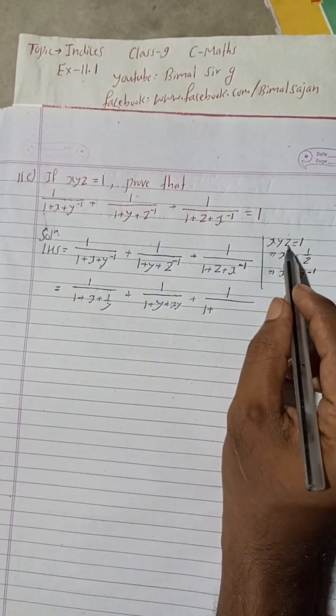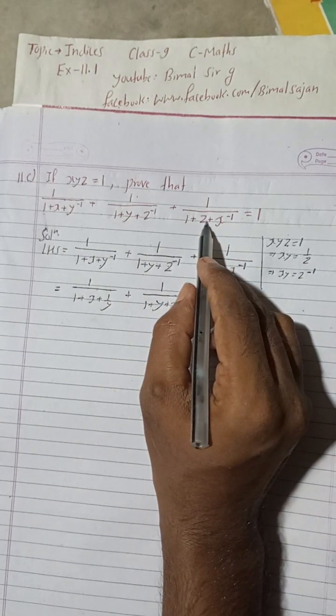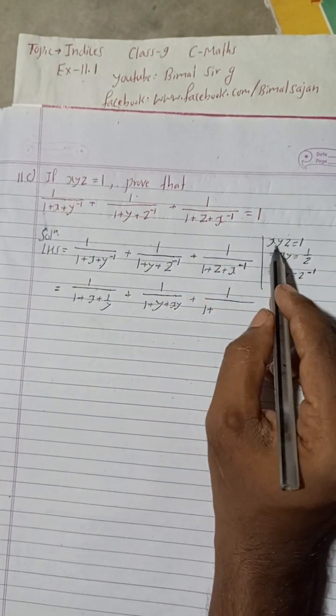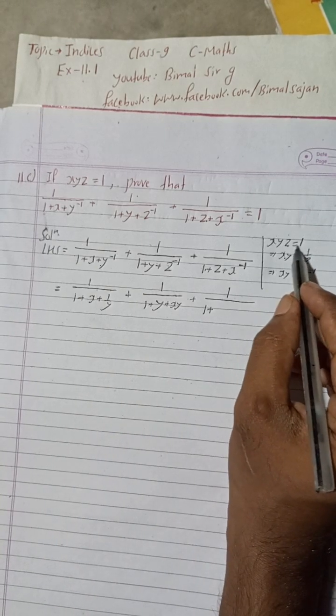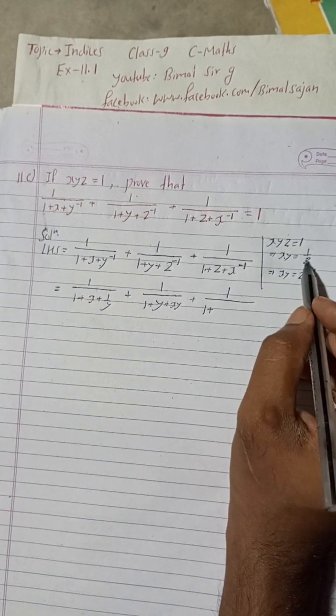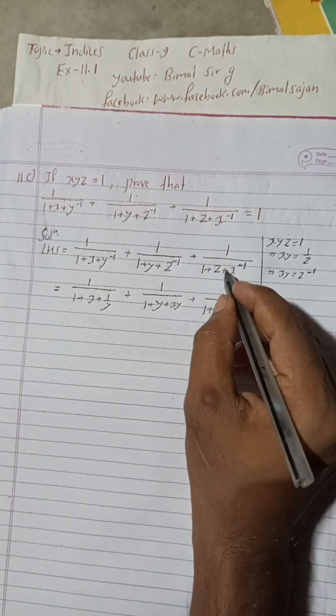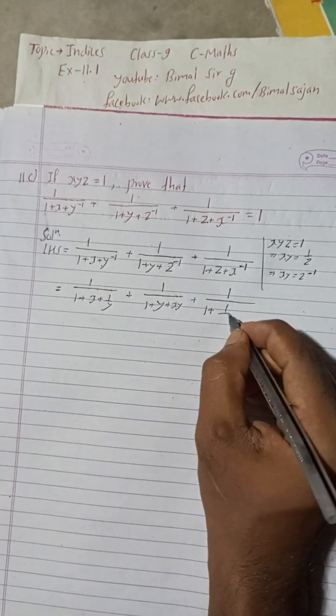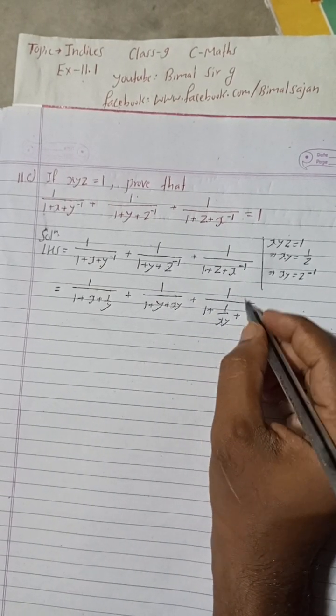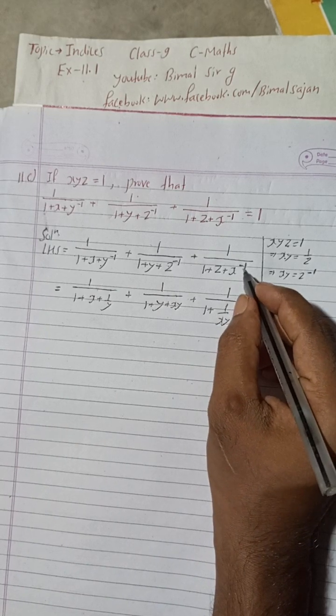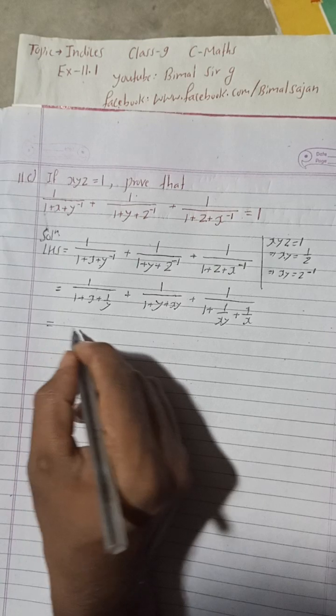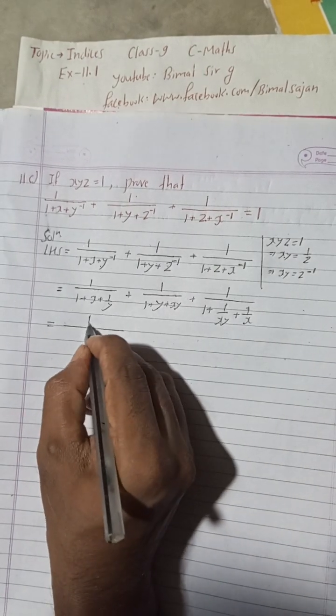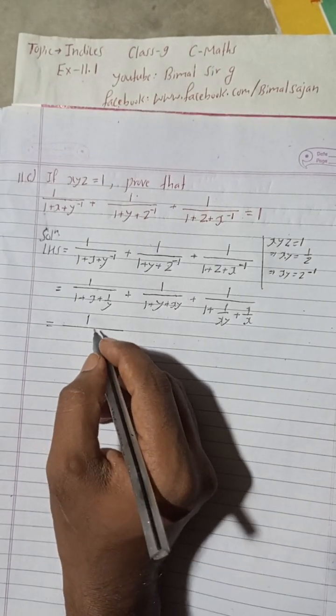z^(-1) is equal to xy, so for z I will write 1/xy plus x^(-1), which means 1/x.